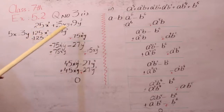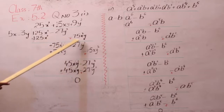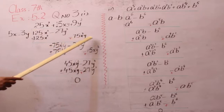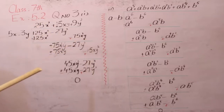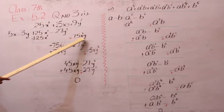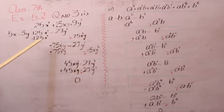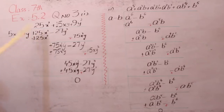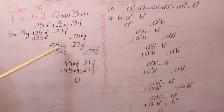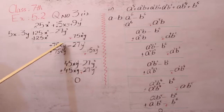अगर ऊपर value same variable वाली ना मिले तो आप उस value को side पे लिख देंगे। Side पे लिखने के बाद, ऊपर वाली value के आगे जो है नीचे इस value को — उनके अगली side पे नहीं, नीचे ही इस value को note कर देंगे। हमारे पास 75x की 2y आ गई जो side पे लिखी है। आपने इनके sign change करने हैं — यह value plus की थी, minus कर दिया। 125x की cube minus 125x की cube — यह cut होकर 0 हो गया।